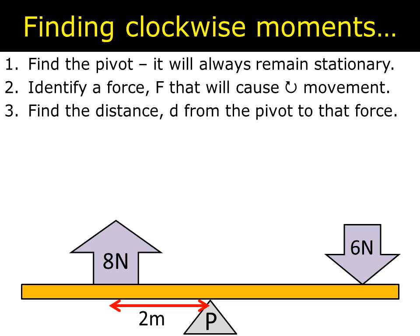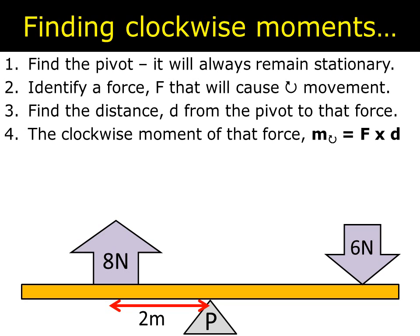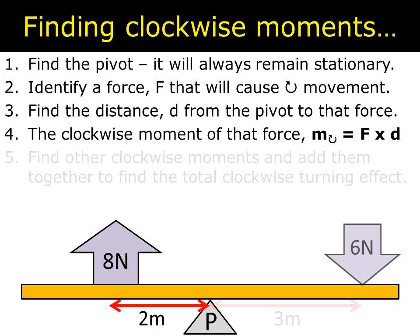We'll start on the 8. You then find the distance from the pivot to that force. So in this case it's 2 meters. And you multiply them together to find the clockwise moment of that force. So in this case the clockwise moment of the 8 newton force is 8 times 2 which is 16. And the units will be newtons times meters. So newton meters. 16 newton meters.